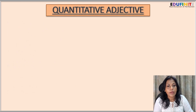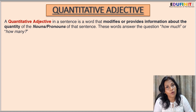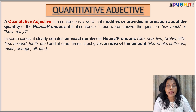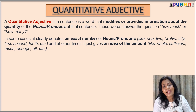The next type is quantitative adjective. A quantitative adjective in a sentence is a word that modifies or provides information about the quantity of the nouns or pronouns of that sentence. These words ask the questions 'How much?' or 'How many?' In some cases it clearly denotes an exact number like 1, 2, 12, 50, or 1st, 2nd, 10th, etc. At other times it just gives an idea of the amount, like whole, sufficient, much, enough, all, etc.